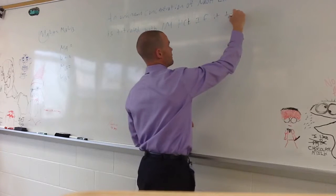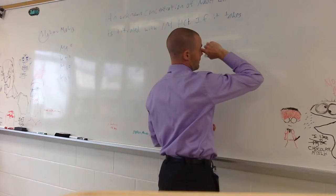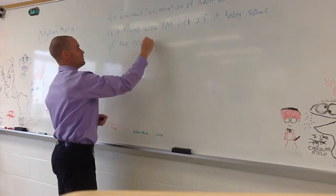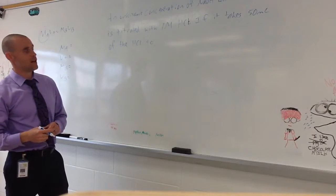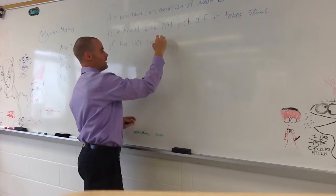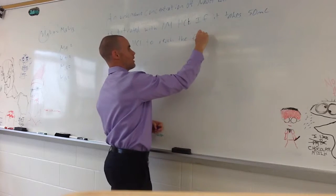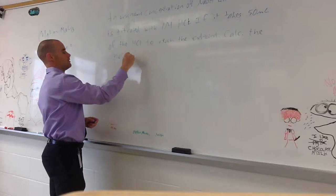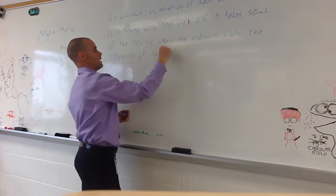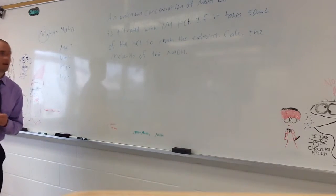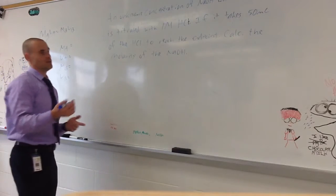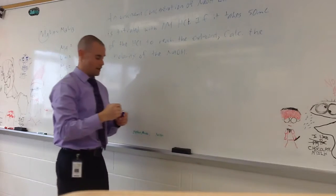If it takes, oh, I don't know, let's go with 50 milliliters of the HCl. If it takes 50 milliliters of the HCl to reach the end point, calculate the molarity, which is concentration. I could use either word, of the NaOH. So, an unknown concentration of NaOH, with a volume of 25 milliliters, is titrated with one molar HCl. Now, if it takes 50 milliliters of the HCl to reach the end point, that should be a comma, I guess, not a period. Calculate the molarity of the NaOH.